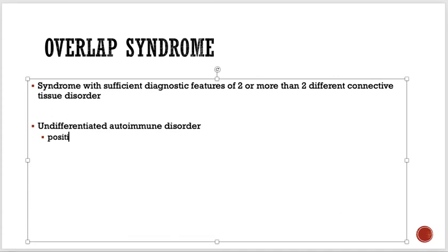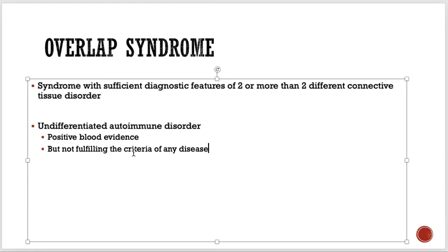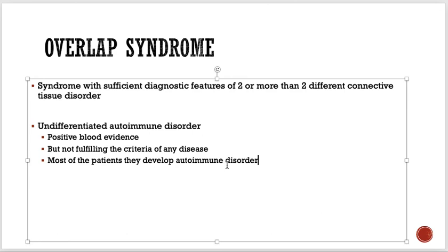They have some features of a condition but not enough to make a diagnosis — positive blood evidence but not fulfilling the criteria of any disease. In overlap syndrome they have complete diagnostic criteria for a condition, but in undifferentiated autoimmune disorder they don't meet the criteria of any condition. Most of these patients develop an autoimmune disorder later on.